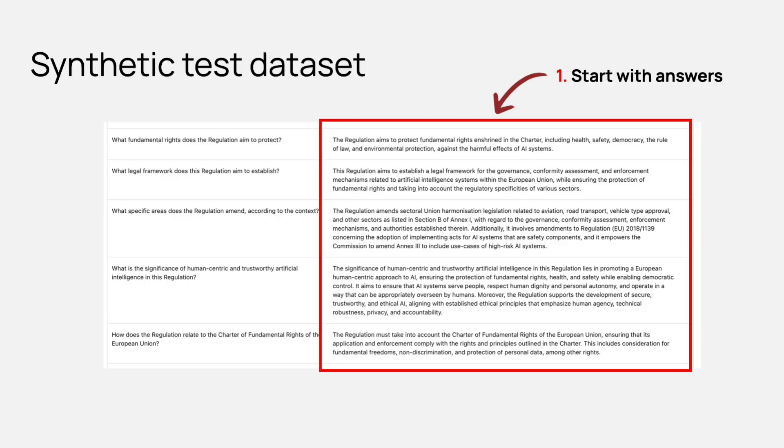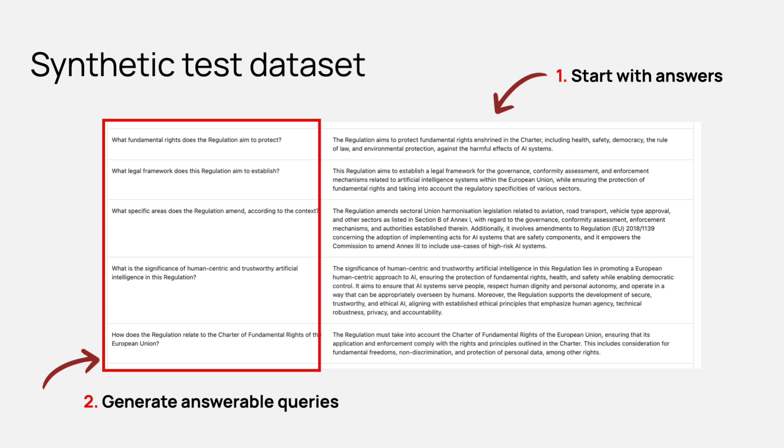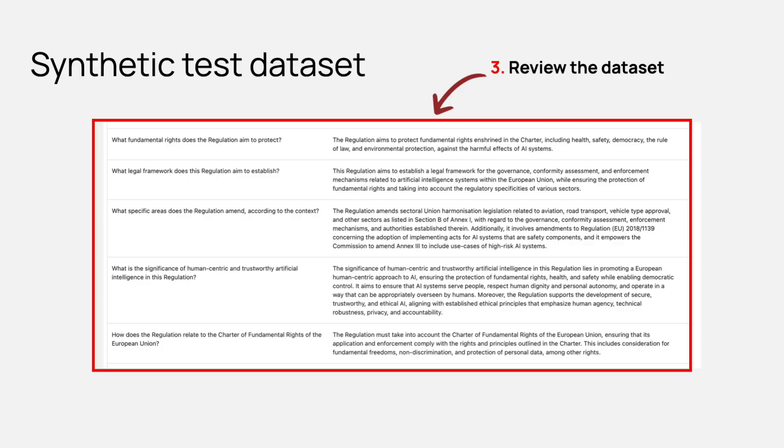Creating these test datasets can be time consuming, but with RAG you actually have a shortcut. You already have the knowledge base you're planning to use for your RAG system. You can use that same knowledge base to create your golden dataset — flip the process, extract chunks, and ask an LLM to formulate questions answerable from that context. This way you create answer-question pairs that you can later review to build your golden dataset. Of course, it still needs some manual curation, but it's much faster than writing everything by hand.